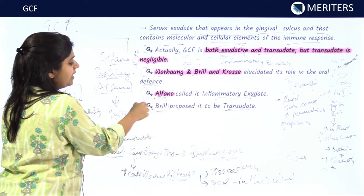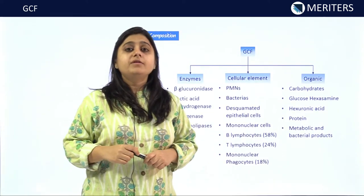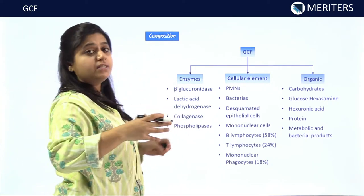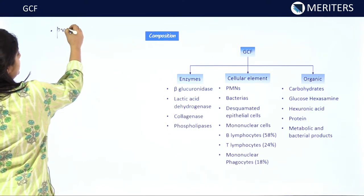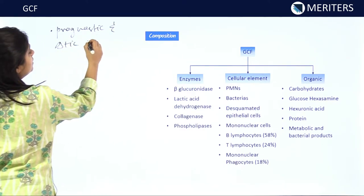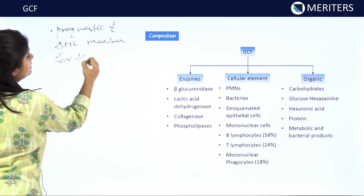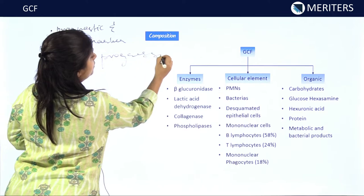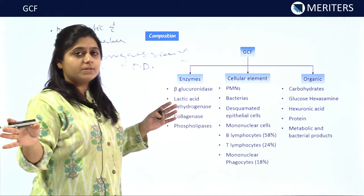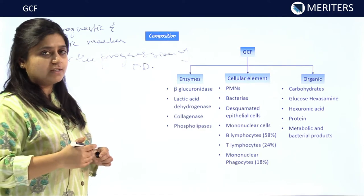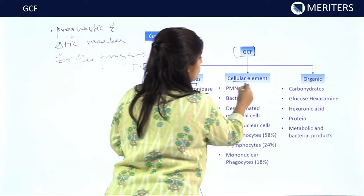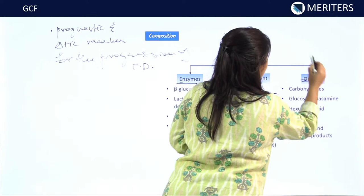Extensive research has been done on the composition of GCF because GCF contains various components which act as prognostic and diagnostic markers for the progression of periodontal disease. Now let us see the composition of GCF. GCF consists of enzymes, cellular elements, organic content, and electrolytes.